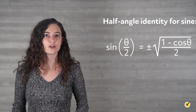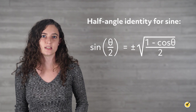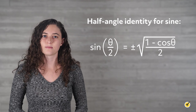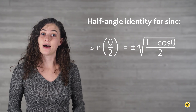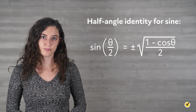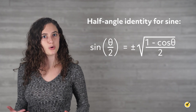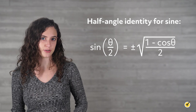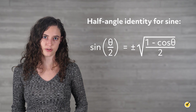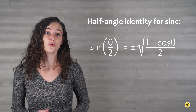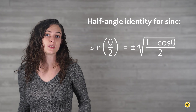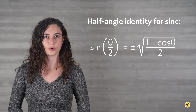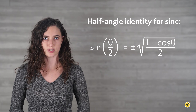Let's jump right in by finding the sine of 15 degrees using the half angle identities. Here's the half angle identity for sine. This is used to find the sine of half a known angle. For our problem, we can use it to find half of 30 degrees, which is 15 degrees. We could also use it to find half of 45 degrees, which is 22.5 degrees.